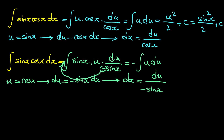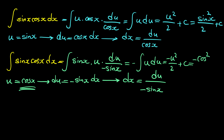So this equals negative integral of u du. We can move the negative as a coefficient outside the integral. Based on the power rule this equals negative u squared over 2 plus C, and since u is cosine x, the answer is negative cosine squared x over 2 plus C.